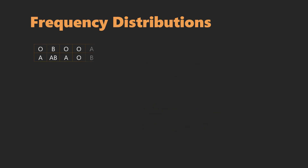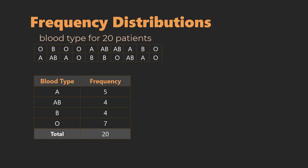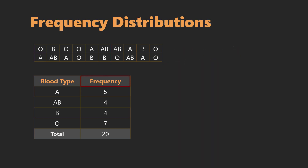Consider this data of blood types for 20 patients at a hospital. We organize them by categories in a frequency table as seen here. Because the data are non-numeric, we refer to them as qualitative or categorical data. The frequency is the number of times each category occurs. This table is an example of a frequency distribution because it shows how the frequencies are distributed across the categories.